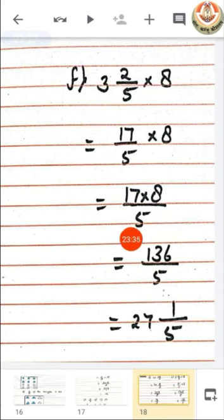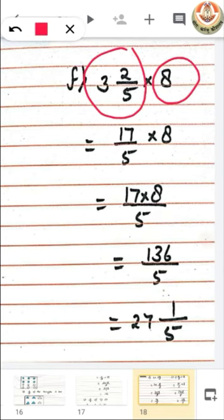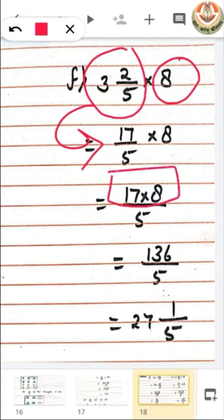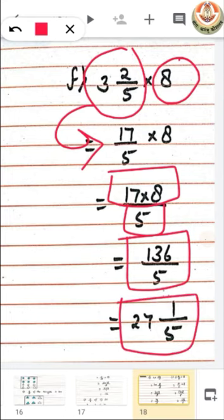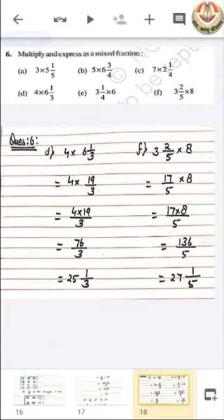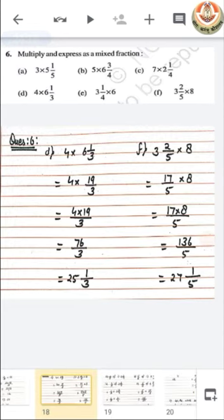We have to convert 76 by 3 into a mixed fraction. After dividing 76 by 3, we get 25 as quotient and 1 as remainder, so the mixed fraction is 25 and 1 by 3. Similarly for the next part: a mixed fraction multiplied by a whole number — convert the mixed fraction to improper form first, then multiply numerator with whole number. Dividing 136 by 5 gives 27 as quotient and 1 as remainder. The other parts are for your practice.